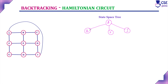Now consider the path through B. From B, the vertices directly connected are E and C. And from C, the unvisited vertex — since B is already visited — the next unvisited vertex is D.